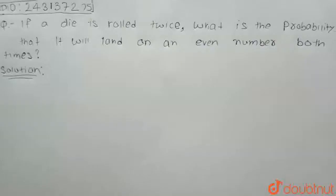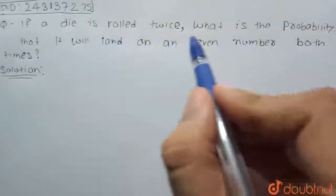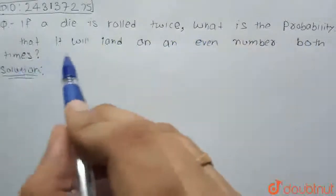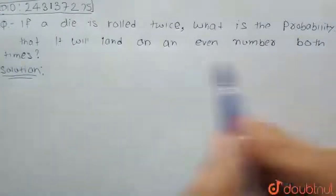Welcome students. Let's see the question. The question is, if a die is rolled twice, what is the probability that it will land on an even number both times?